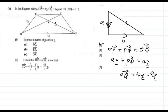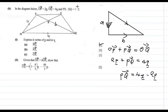Now find vector PX. PX goes from P to X. They tell us that the ratio of PX to XQ is 1 to 2. So to find PX we have to use this ratio. The ratio PX to XQ is 1 to 2.